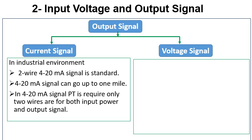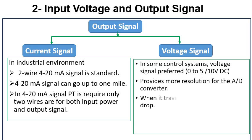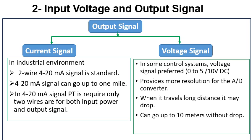Voltage signal: in some control systems, voltage signals such as 0 to 5V or 0 to 10V are often preferred. The voltage signal provides more resolution for an analog-to-digital converter. The major drawback of a voltage output signal is that it can travel only up to 10 meters without any drop.